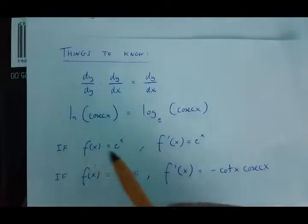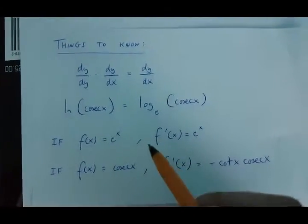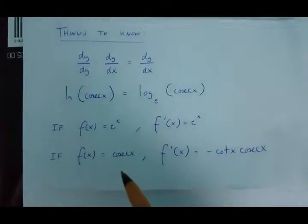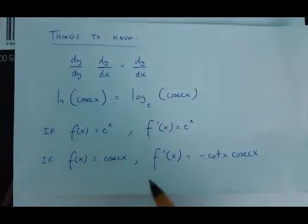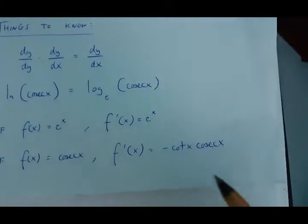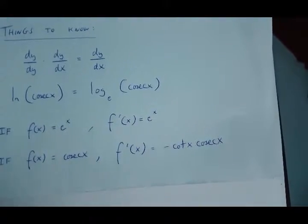Also, if the function of x equals e to the power of x, then its derivative is the same. And lastly, if the function of x is cosec x, then its derivative is going to be minus cot x times cosec x.